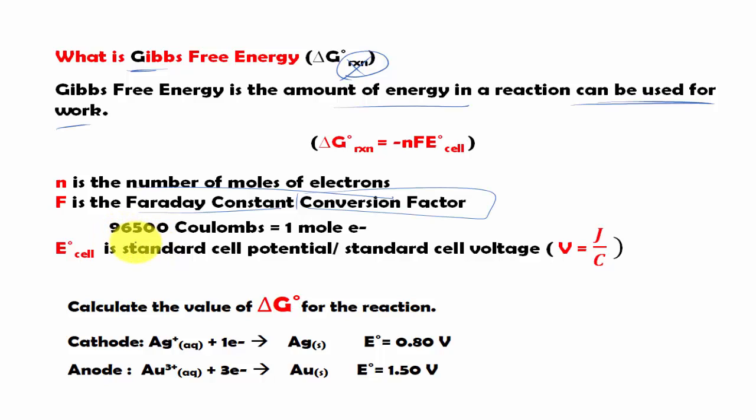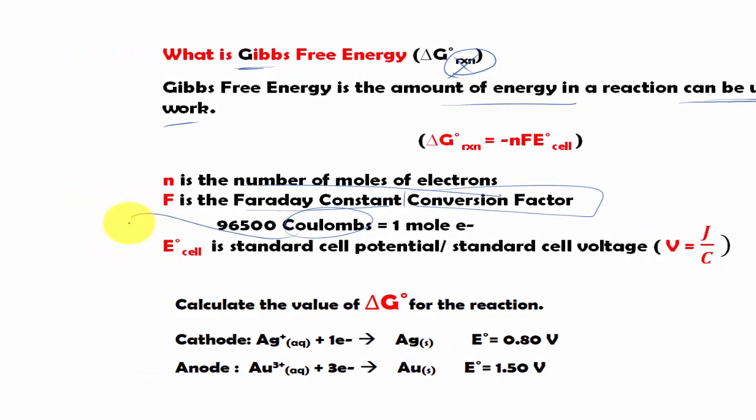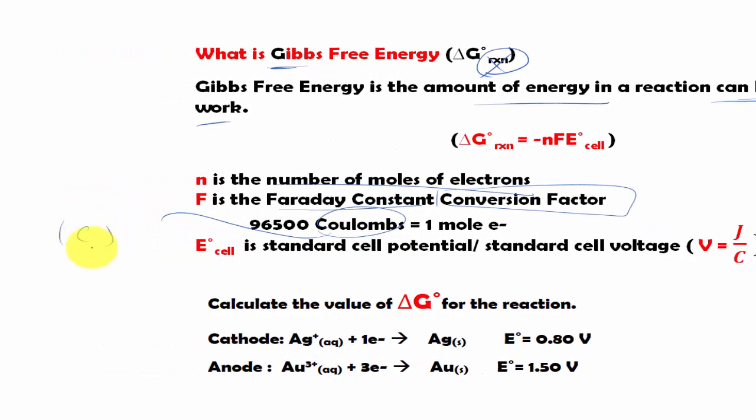That is 96,500 coulombs, or coulomb represented by the letter C, equal to 1 mole of electron. Lastly, we have the E°_cell, which is the standard cell potential.